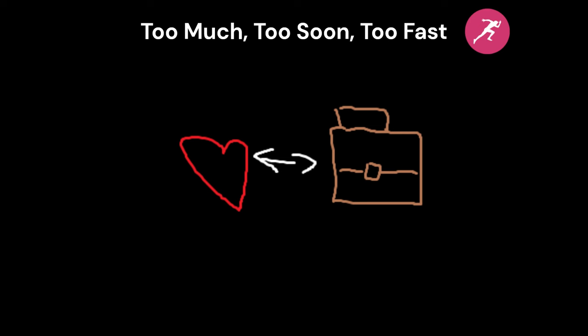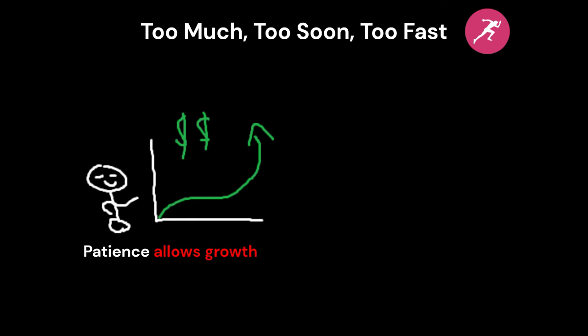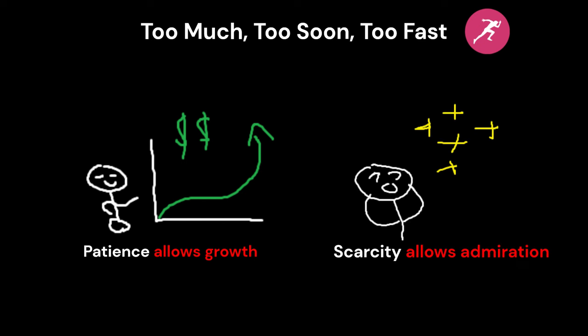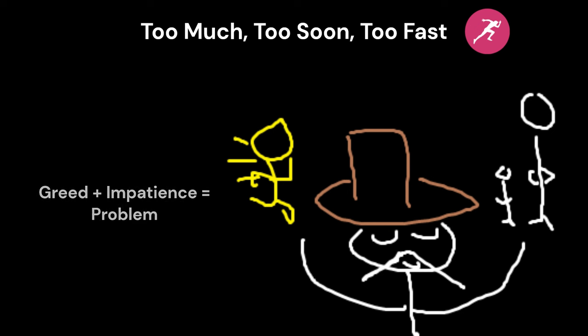The most important things in life, ranging from love to careers, is that they gain their value from patience and scarcity. Patience allows something to grow and flourish, while scarcity allows us to admire what it grows into. But the two most common tactics people use to pursue something important is to make it faster and bigger, which has always been a problem.